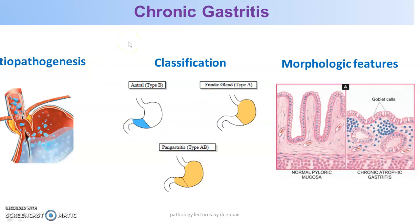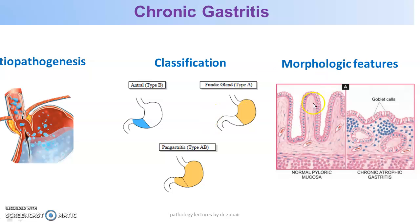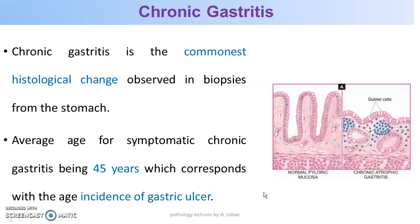Acute gastritis over a period of time leads to chronic gastritis. Chronic gastritis can be classified as fundic type A, antral type B, and pangastritis which is type AB. On microscopy, there is atrophic gastritis — the normal length of the glands is reduced and there is lymphoid follicular infiltrate. Chronic gastritis is the commonest histologic change observed in biopsies from the stomach, with an average age for symptomatic chronic gastritis of 45 years.